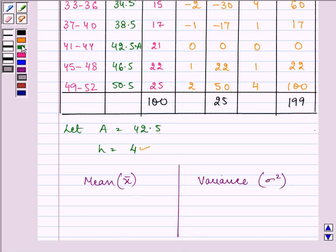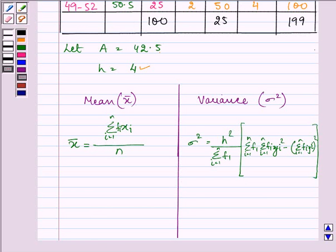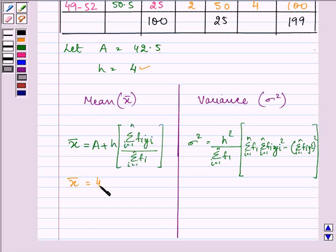So to find out standard deviation, firstly, we need to find out variance also. So we have their formulas. We have mean as equal to the summation of fi xi and that is equal to A, that is taken to be 42.5 plus h, that is 4, into 25 by 100.